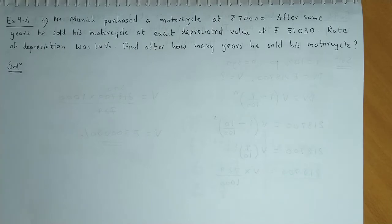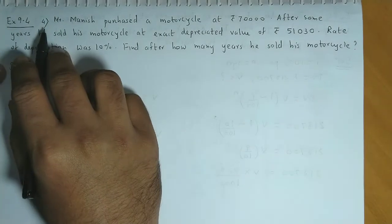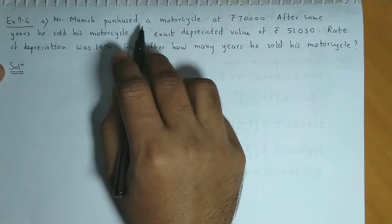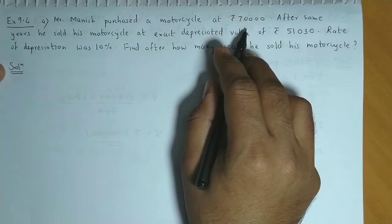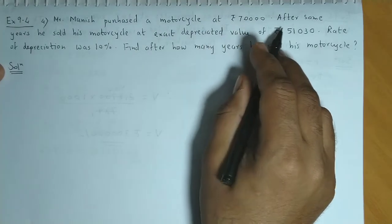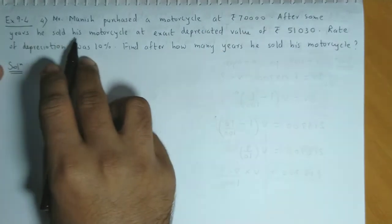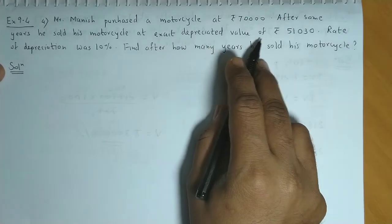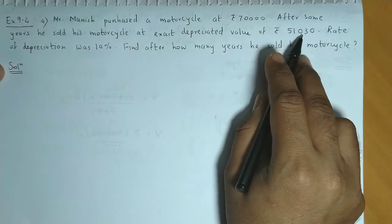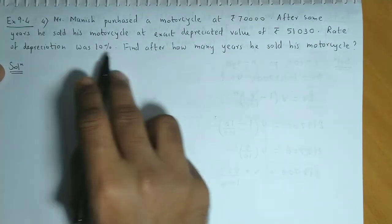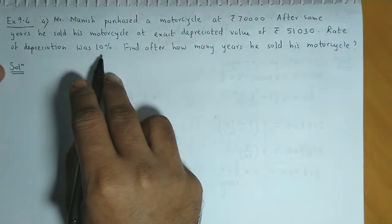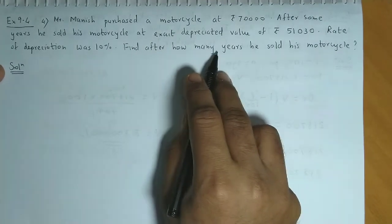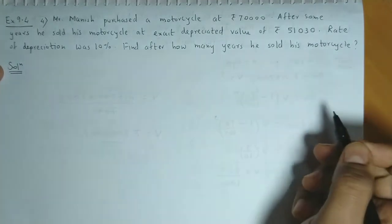Exercise 9.4, Sum No. 4. Mr. Manish purchased a motorcycle at Rs. 70,000. After some years, he sold his motorcycle at exact depreciated value of Rs. 51,030. The rate of depreciation was 10%. After how many years he sold his motorcycle?